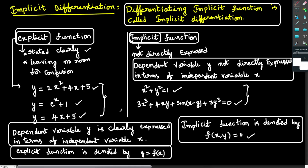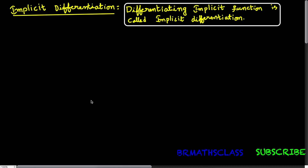Implicit differentiation. Differentiating an implicit function is called implicit differentiation. This is an introduction class to implicit differentiation. In this class, we will learn what is an implicit function. To understand the definition of implicit function, we must first know about explicit function. So in this class, we will learn about explicit function and implicit function.